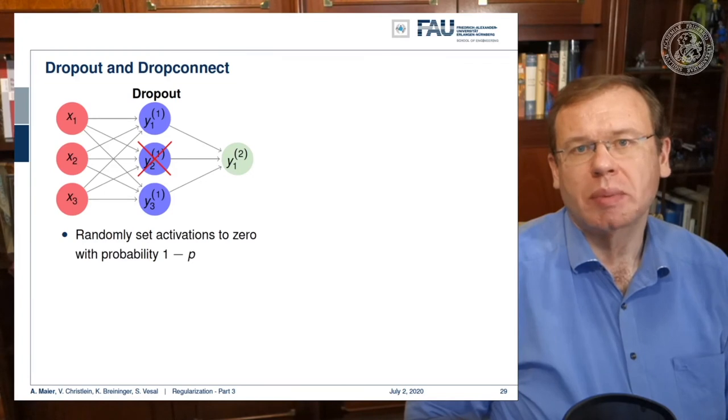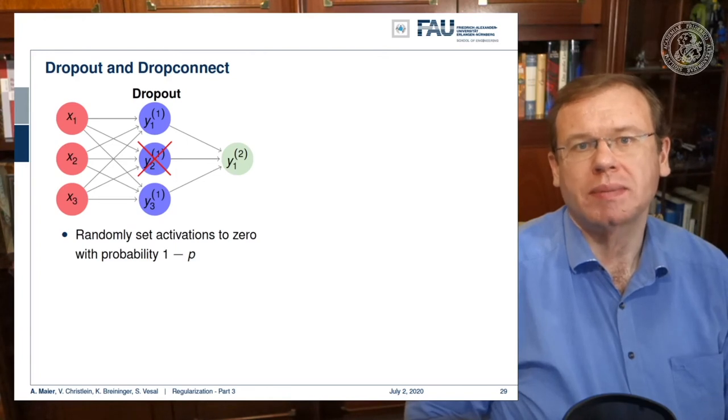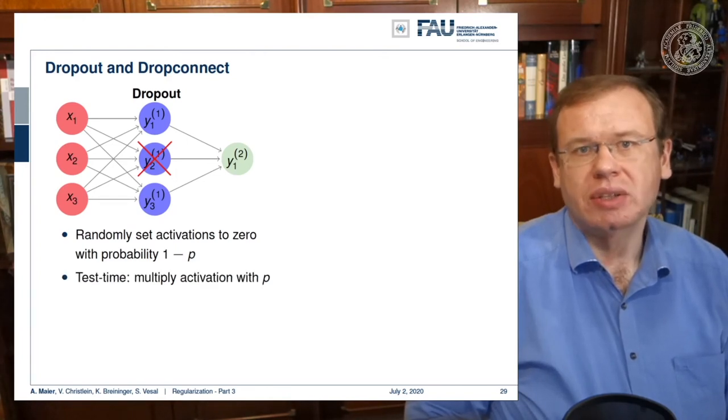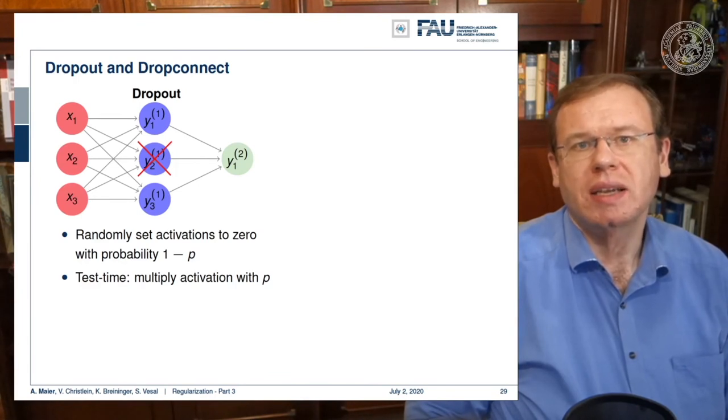It is essentially the idea that you randomly kill some of the neurons and set them to zero. So you select a probability p and you randomly set activations to zero with probability one minus p. Then during test time, you have to multiply all of the activations with p because otherwise you would have a too high activation in the next layer. So you have to compensate for this effect at the test time.